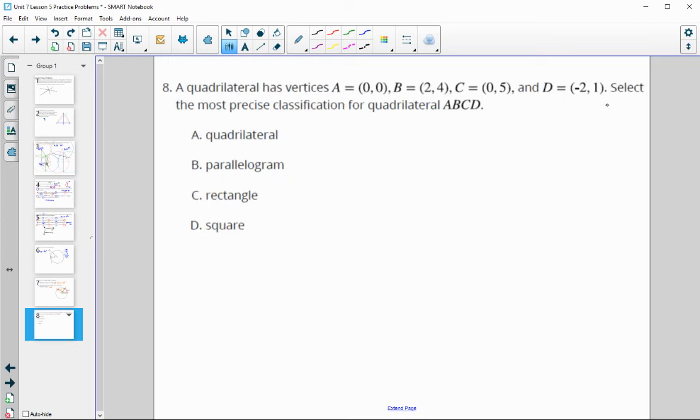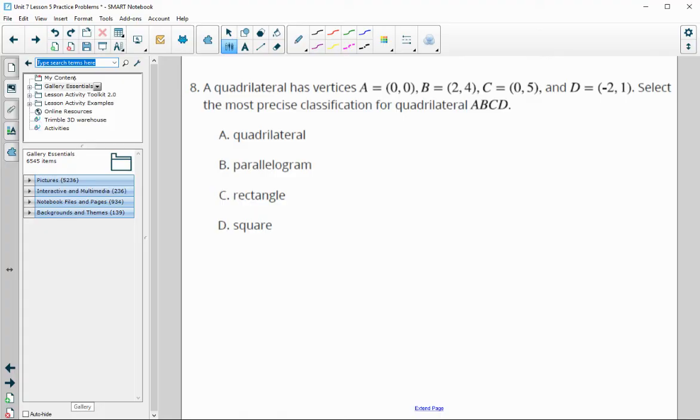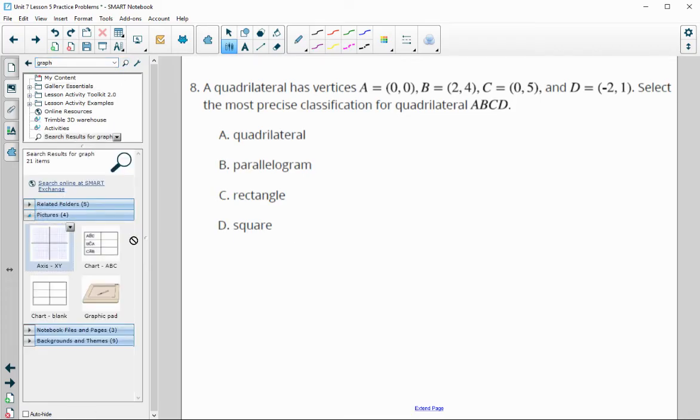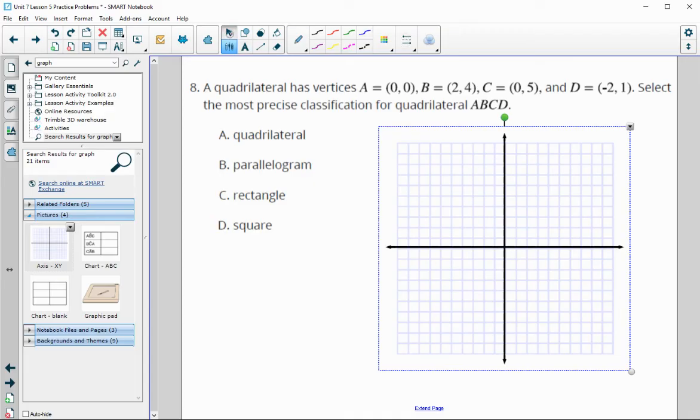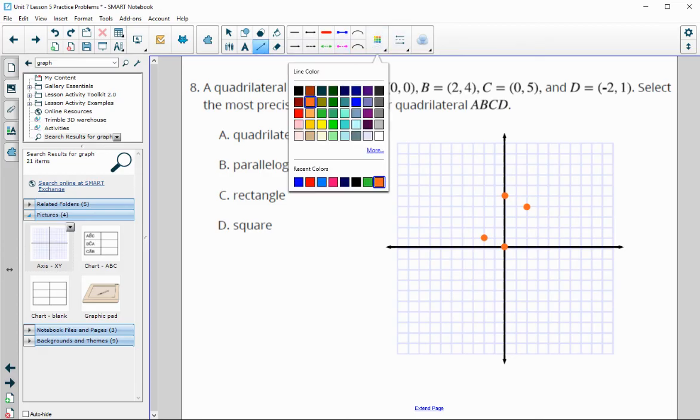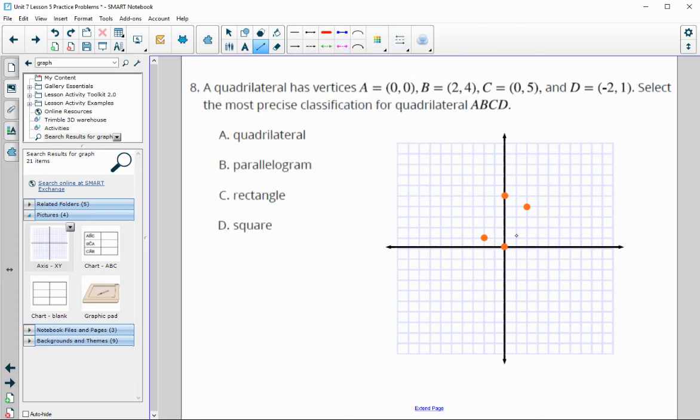Number eight, a quadrilateral has these vertices. Select the most precise classification for the quadrilateral. A couple different ways to do this. One is to graph it. So I'm going to graph it. Let's put these points on here. We've got the point 0, 0 for A, 2, 4 for B, 0, 5 for C, and negative 2, 1 for D. Then we can connect these to take a look at them.